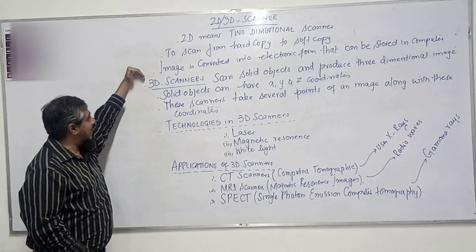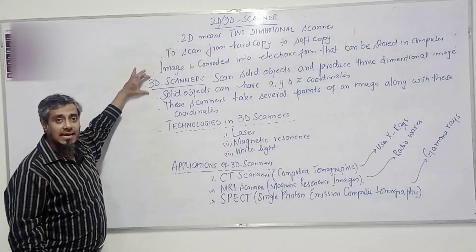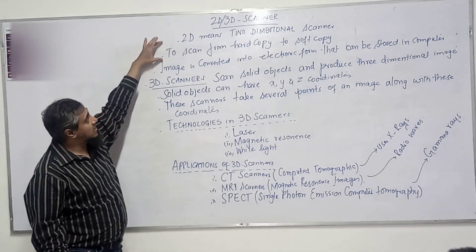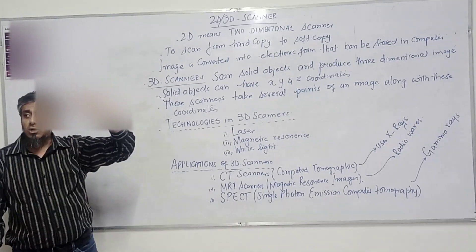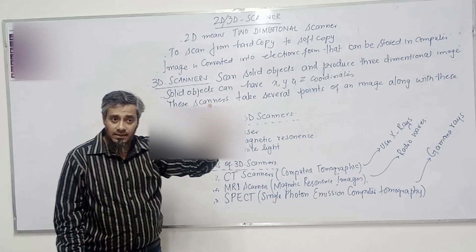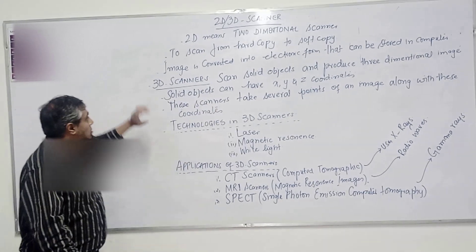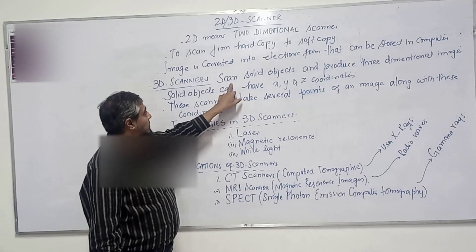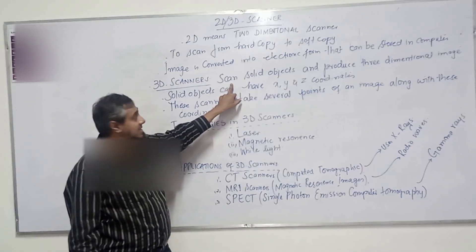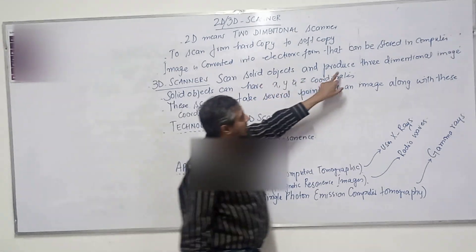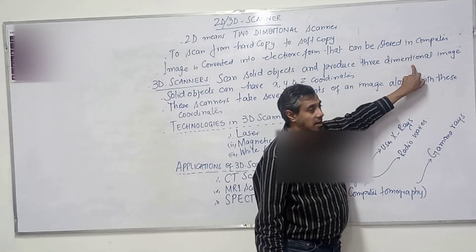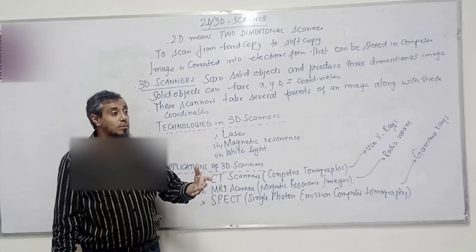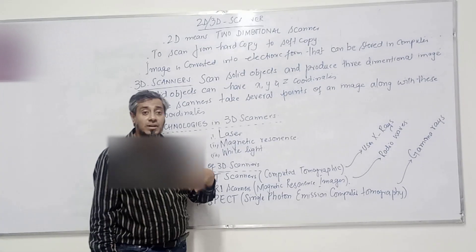Now we will talk about another scanner, the 3D Scanner. In a 2D scanner we have 2 coordinates — X-axis and Y-axis. For the 3D Scanner, the purpose is that it will scan solid objects and produce a 3D dimensional image. It will scan the image but it will not print the image. For printing you need a 3D printer.